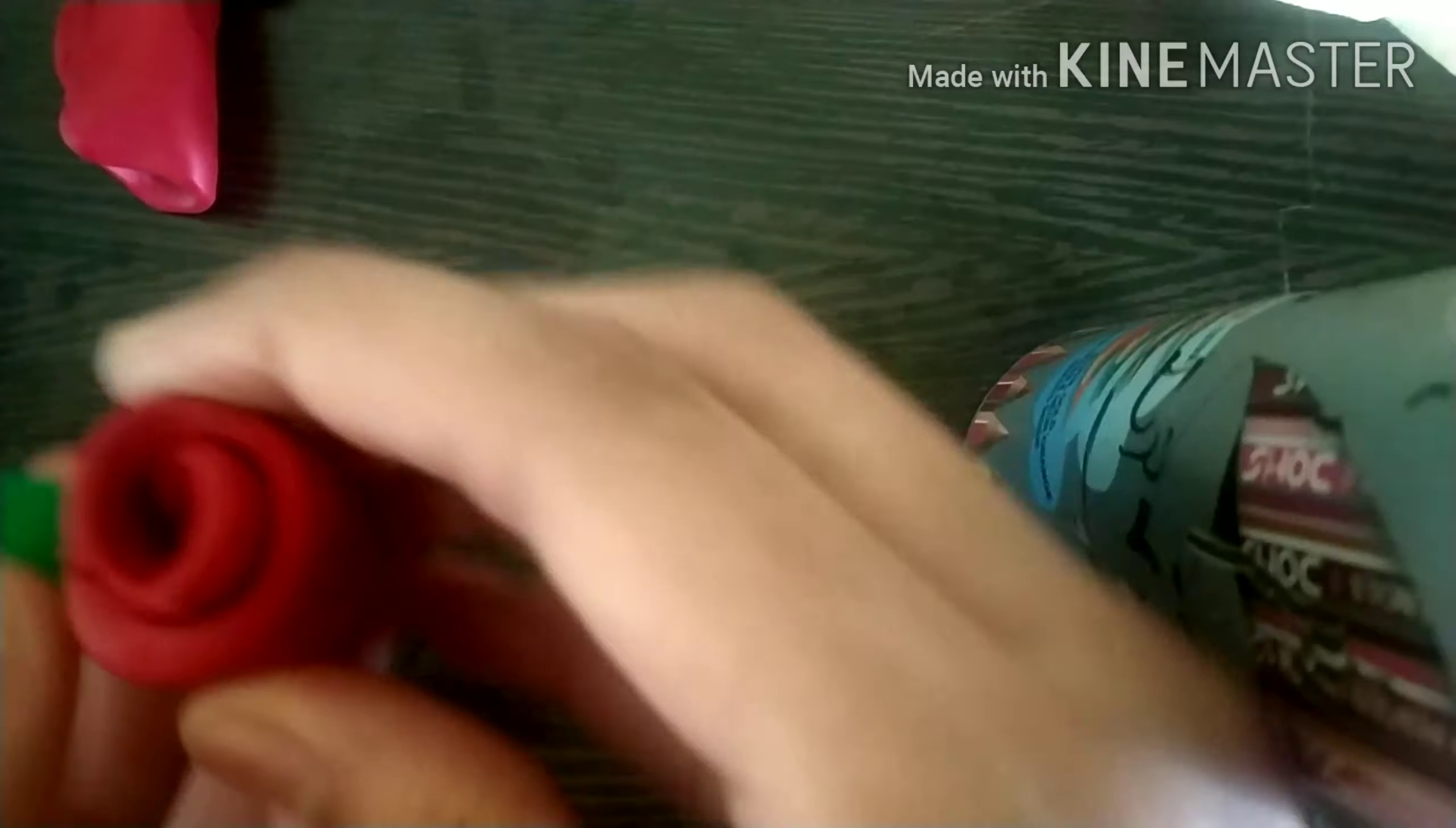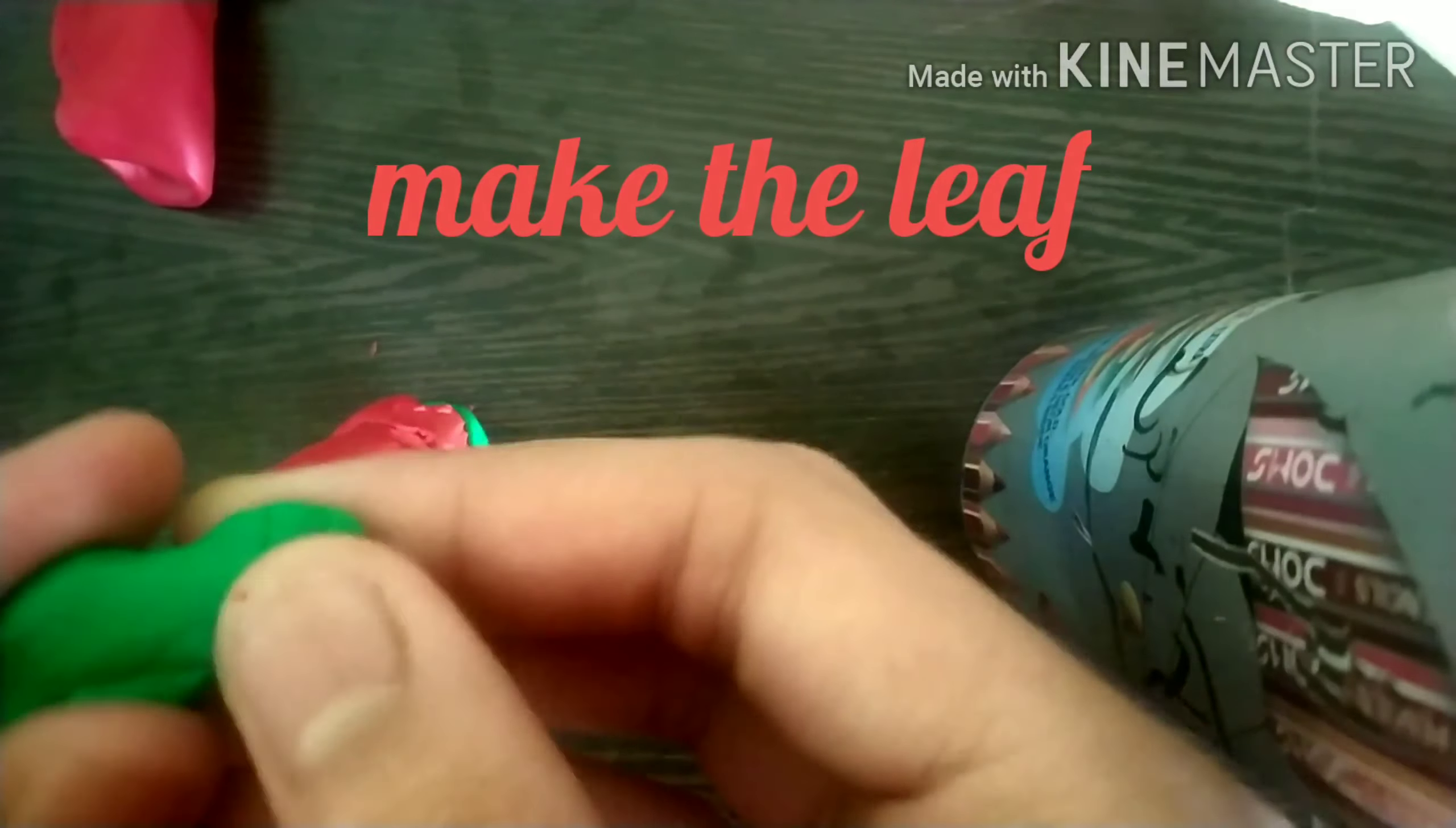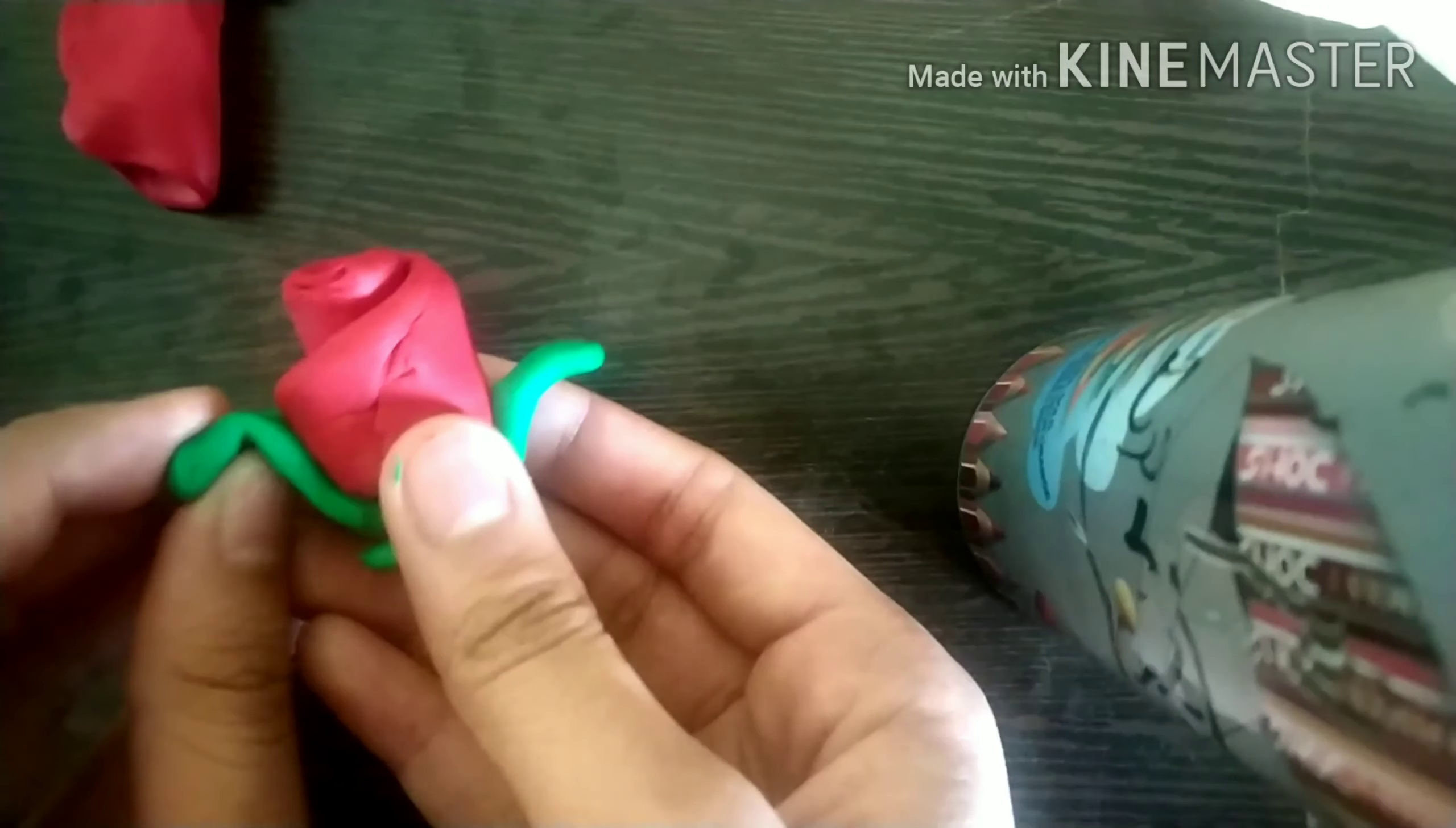Perfect, just like this. Make the same way the second leaf as well. Attach from the back side. Your rose will look like this.